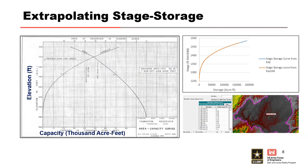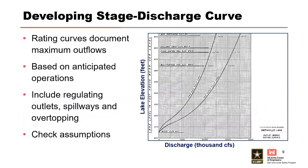The stage-storage-discharge function must be monotonically increasing, meaning both storage and discharge must increase with increasing stage values. The stage versus discharge relationship, also referred to as the stage-discharge function, relates water surface elevation to total discharge. Stage-discharge information can typically be found in water management documents. The stage-discharge relationship should include total releases: outlet works, spillways, powerhouse if present, any overtopping, and any other discharge facility at your dam.